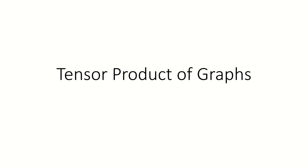Hello. Today we're going to talk about tensor products of graphs, a binary graph operation that is also known as the graph categorical product. The tensor product of a graph depends upon Cartesian products of sets, so if you're not sure how to find the Cartesian product of two sets, check out my video on graph Cartesian products to find out.